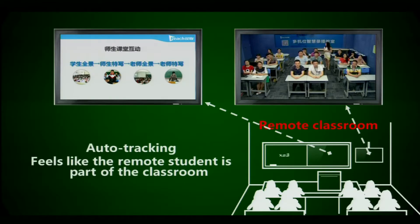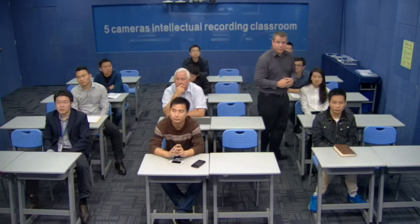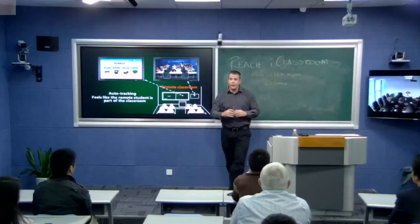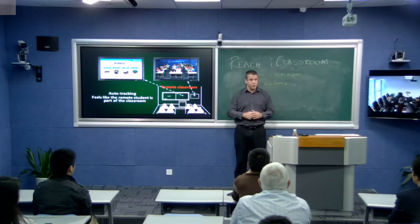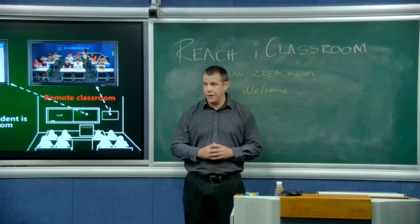Auto-tracking technology: the camera will track me as I walk through the audience, allowing students in the distant classroom to truly feel like they are part of the main classroom. When I stop by a student, the system focuses on me and my interaction with the student. When I move back to the stage, the camera tracks me again and pans out wide to focus on the entire podium.